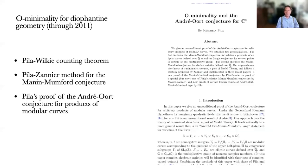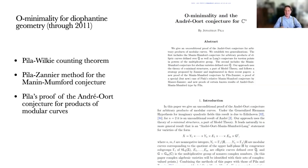Then there was the spectacular result by Jonathan Pila, where he solved for the first time unconditionally — without assuming the generalized Riemann hypothesis or other strong hypotheses of a transcendental number-theoretic nature — the André-Oort conjecture. The André-Oort conjecture is not going to be the main point of this talk, but this was a proof that I think was really, really fantastic.